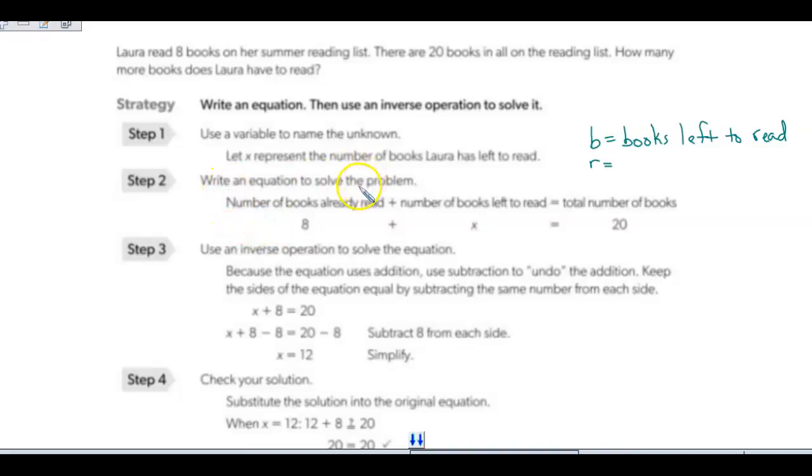Then we're going to write an equation to solve the problem. We know that Laura has already read 8 books off the list. There are 20 books in all. So, total is 20 books. And they want to know how many more does Laura have to read to get to 20 books. When we're writing this, the number of books that she's already read was 8. The number of books left to read, that's our unknown. Remember that was x equals the number of books that she has left to read. So, that's going to be our variable here. We've got 8 plus x, and we know that the total number of books is going to be 20. So, there's our equation: 8 plus x equals 20.